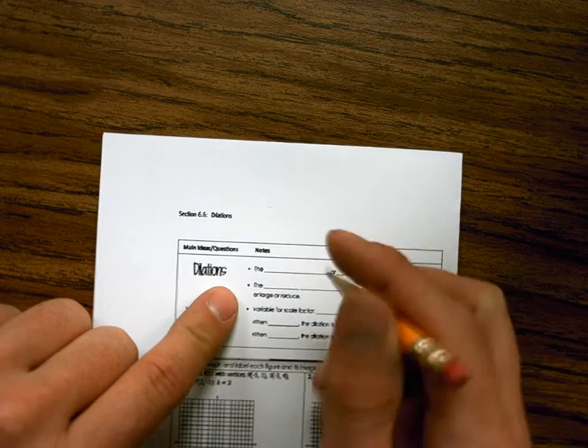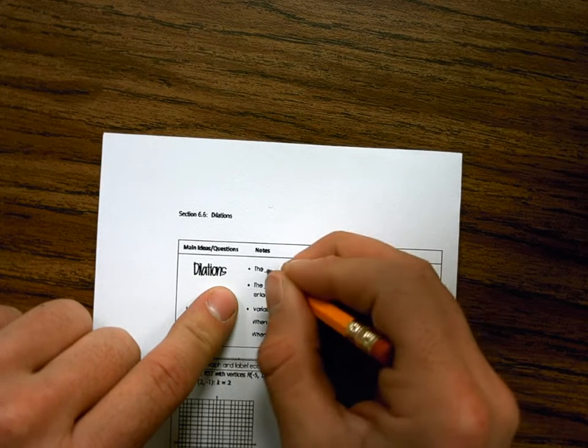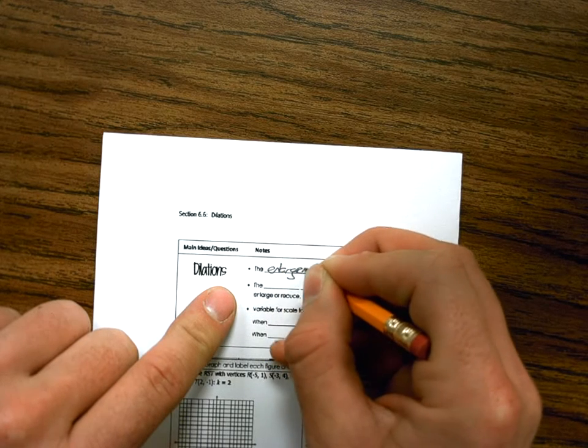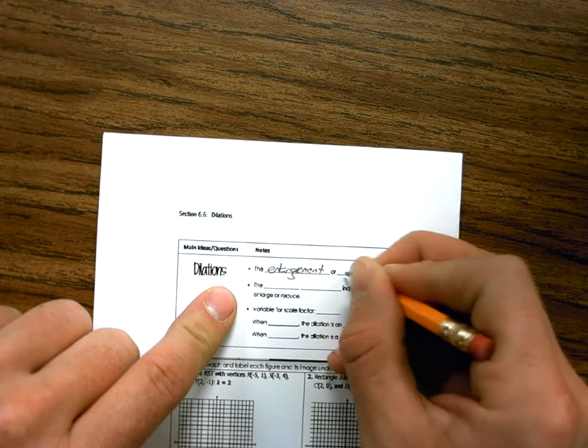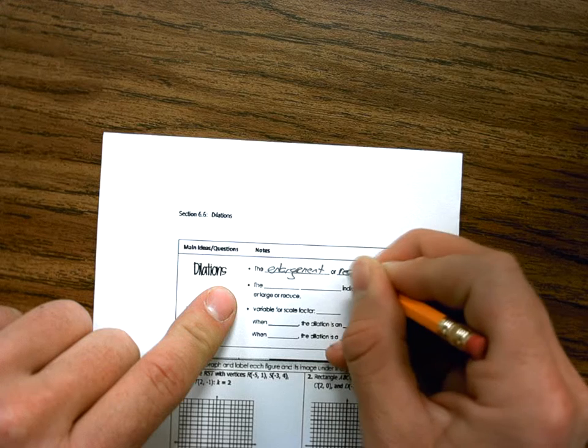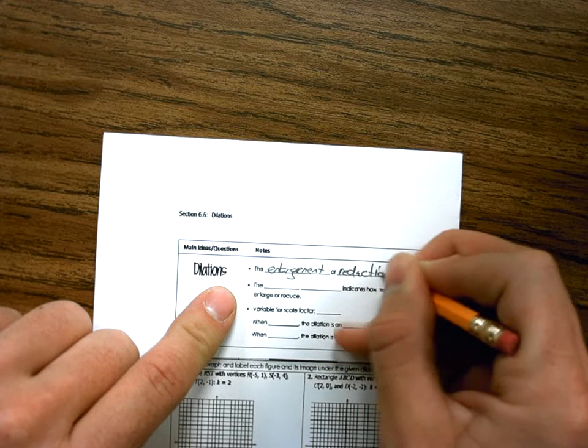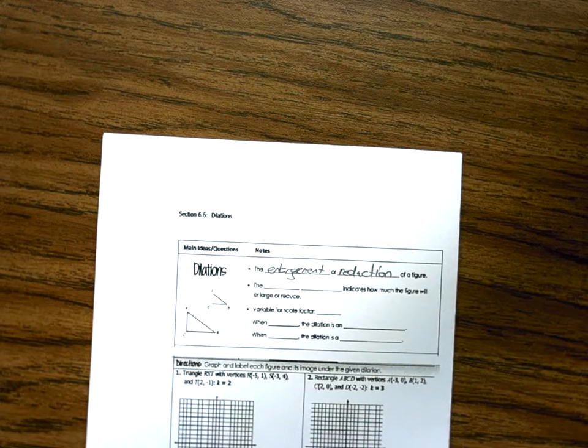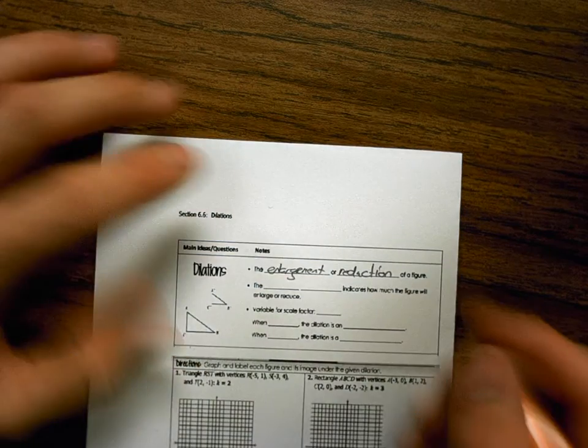Okay, now it's working. Dilation, the enlargement or reduction of a figure. So like I talked about earlier, the pupil of your eye getting larger or smaller.